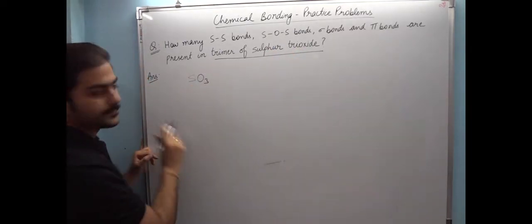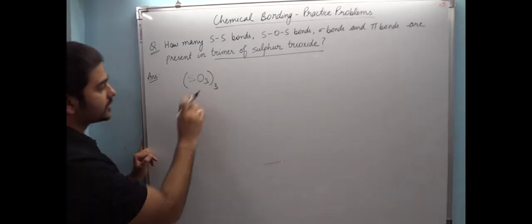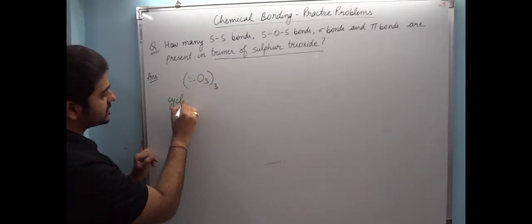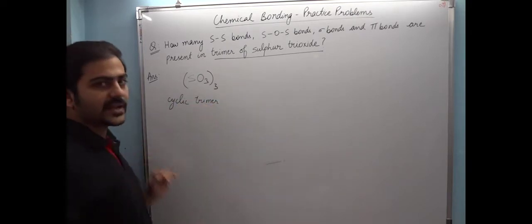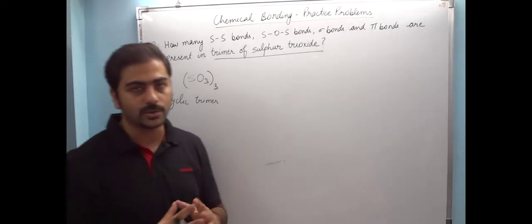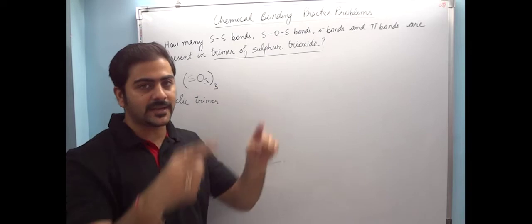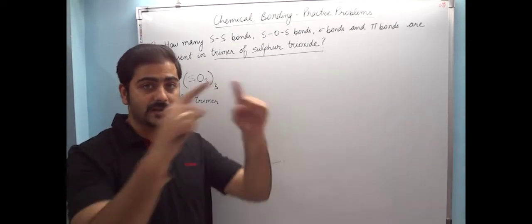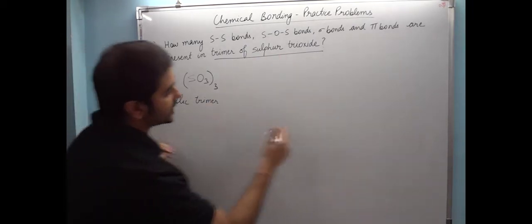Sulfur trioxide is SO3, and its trimer means SO3 three times. Normally this is a cyclic trimer, so in 99% of cases it will be a cyclic trimer. And six-membered cycle is the most stable, so we are going to have a cyclic trimer.